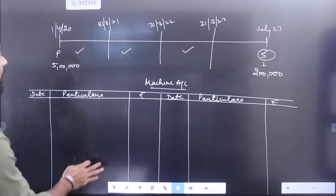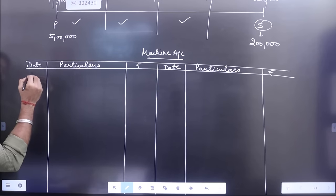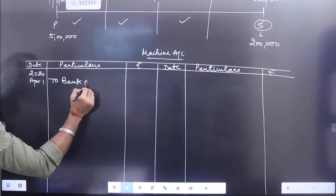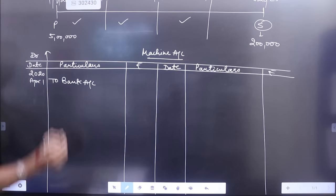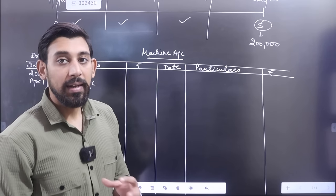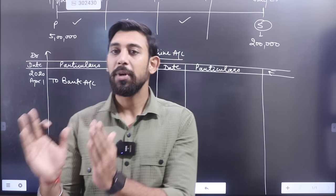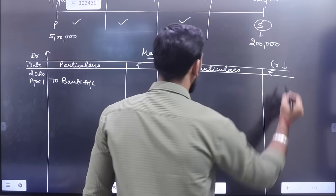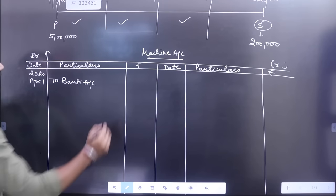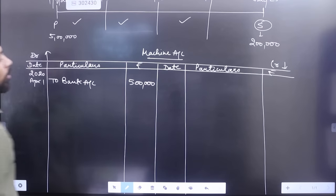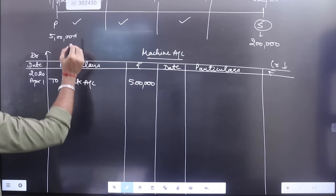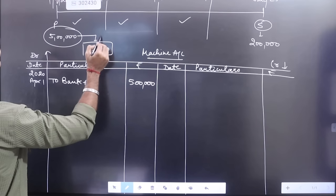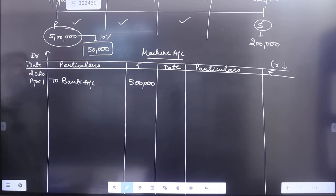2020 April 1st - bought the machine 5,00,000 - to bank account. When you buy the machine then you write it on the debit side because the asset is increasing. If you know the ledger posting: machinery debit to cash, or machinery debit to bank. So machine debit posting - the concepts are the same. Depreciation rate is 10%.